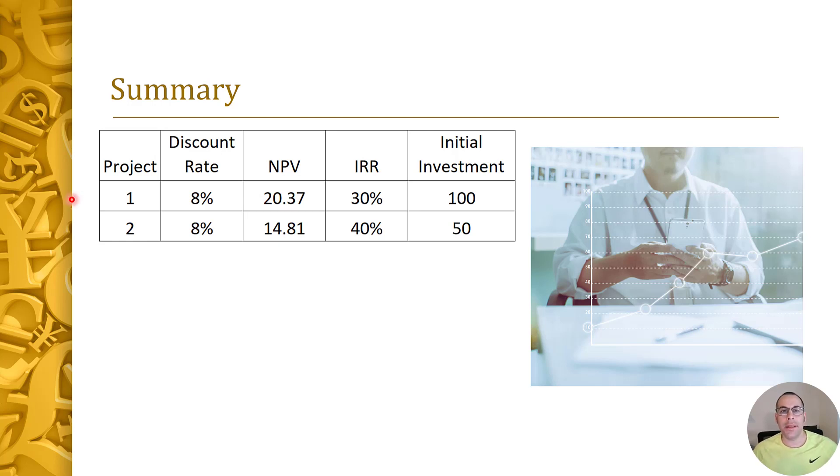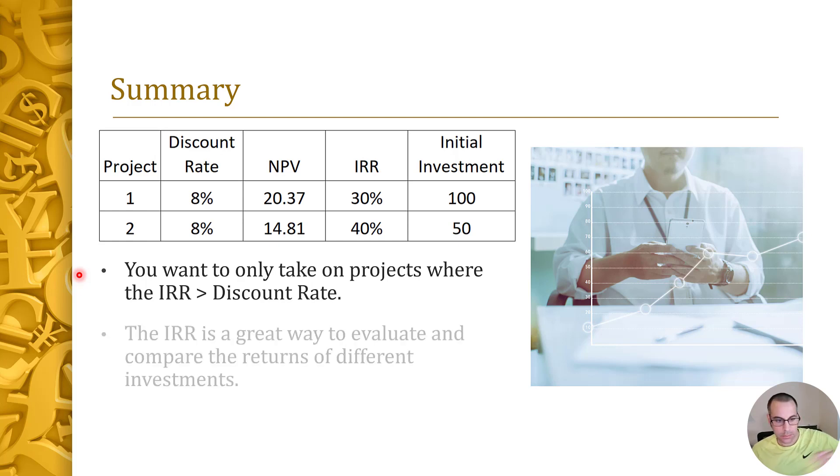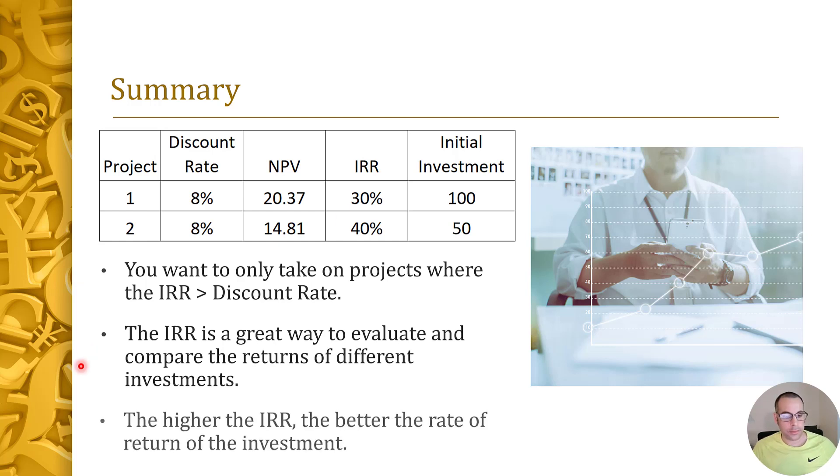But not every company has unlimited money to invest, so you'll only want to accept projects where the internal rate of return is greater than discount rate, which is the same as the NPV greater than zero. The internal rate of return is a great way for a company to evaluate different investments. So generally speaking, the higher the IRR, the better. But you also want to look at the risk of the investment, that's the discount rate, the NPV as well.